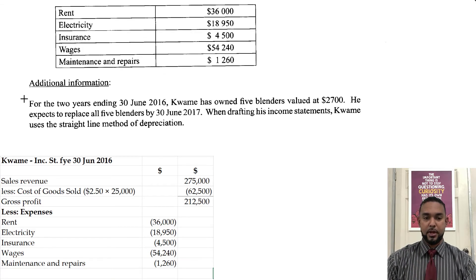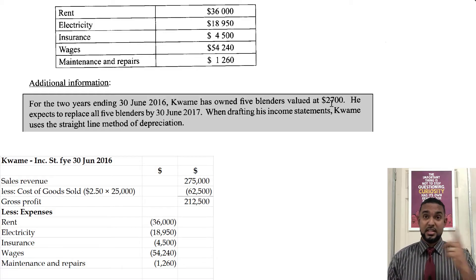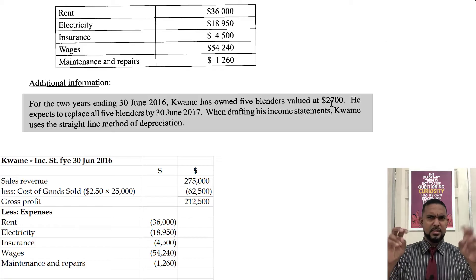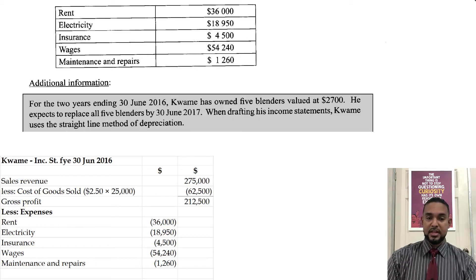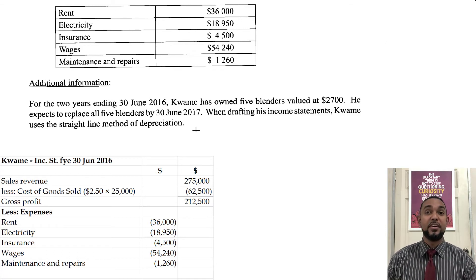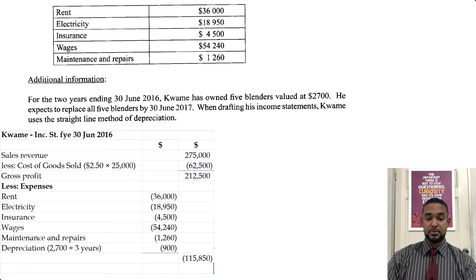Let's approach it rationally. For the two years ending 30th June 2016 — the current year — Kwame has owned five blenders valued at $2,700. He expects to replace all five blenders by 30th June 2017, so they have one more year left. That means he will have had them for three years total. Using the straight line method, he will depreciate the blenders evenly over three years — the same amount each year. So we take $2,700 divided by 3 = $900 depreciation per year. Totaling all expenses gives $115,850. Subtracting that from gross profit gives a net profit of $96,650.